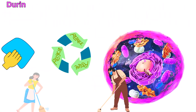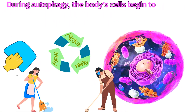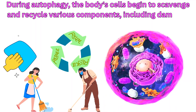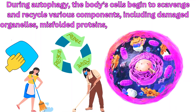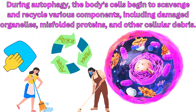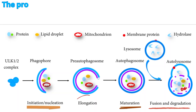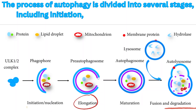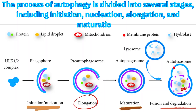During autophagy, the body's cells begin to scavenge and recycle various components, including damaged organelles, misfolded proteins, and other cellular debris. The process of autophagy is divided into several stages, including initiation, nucleation, elongation, and maturation.